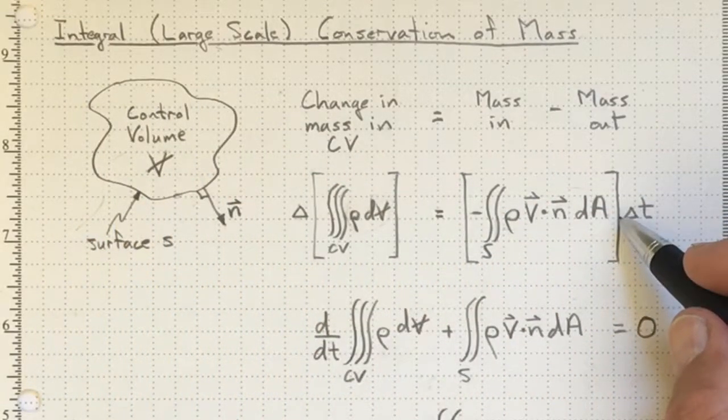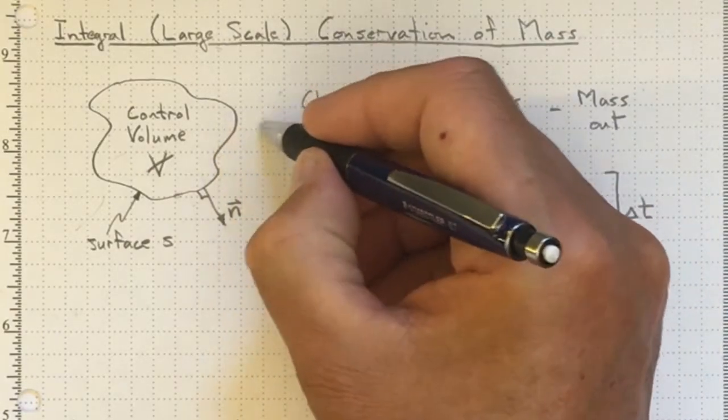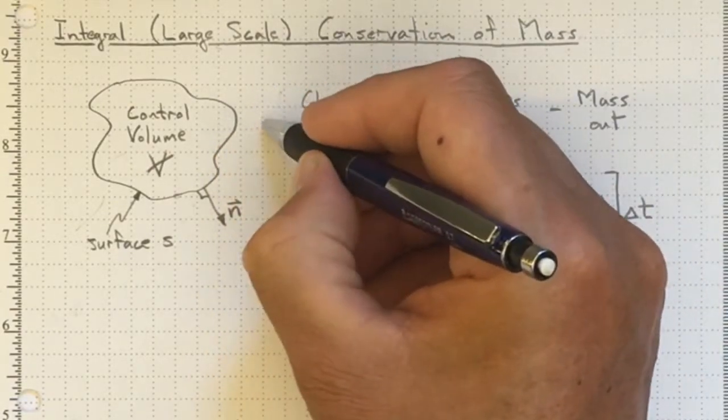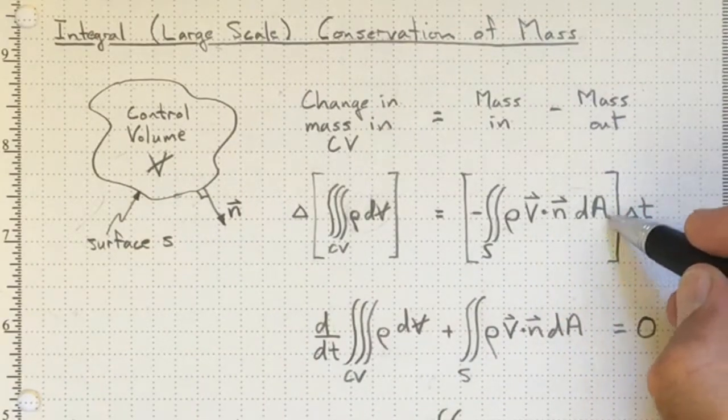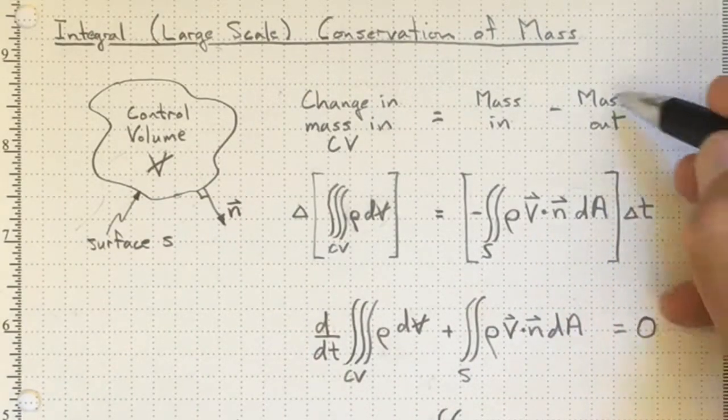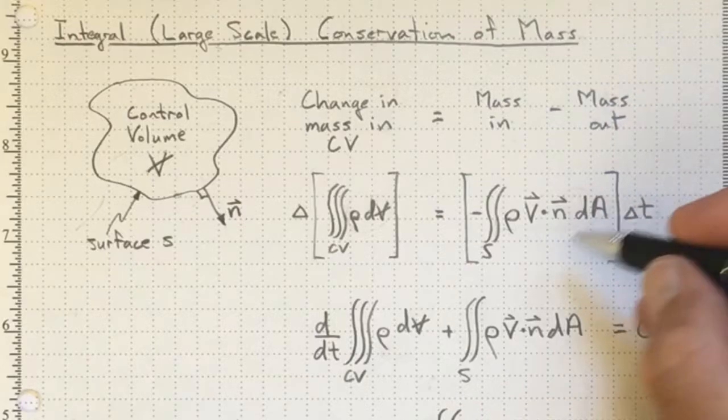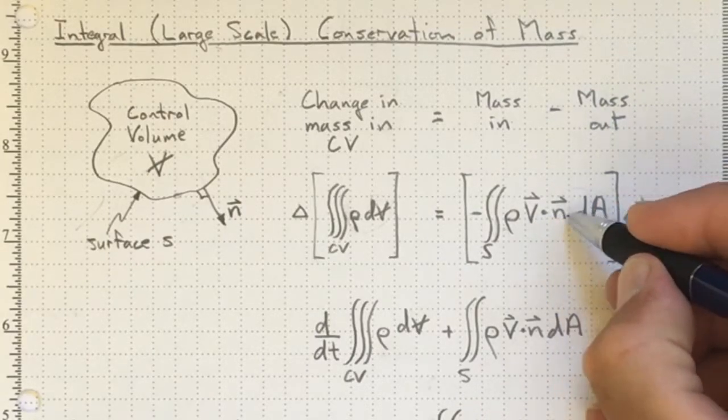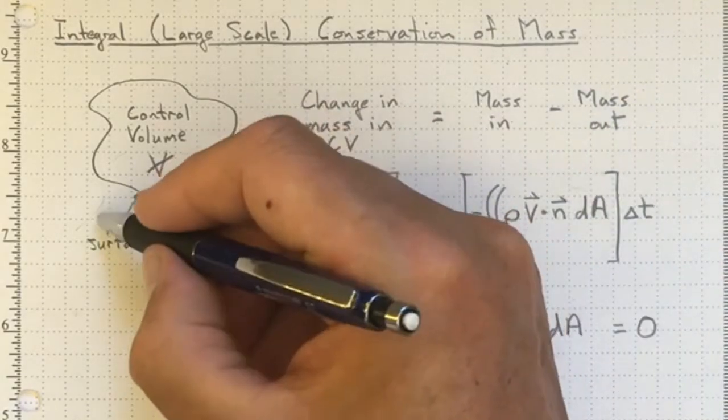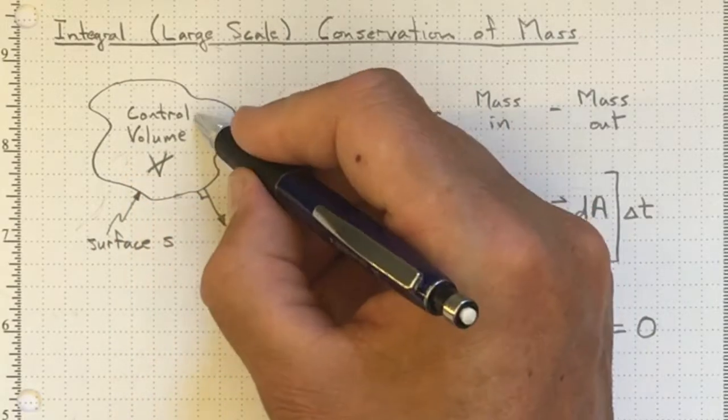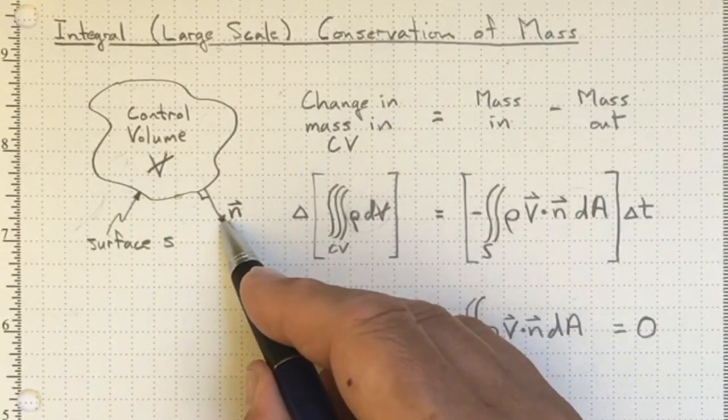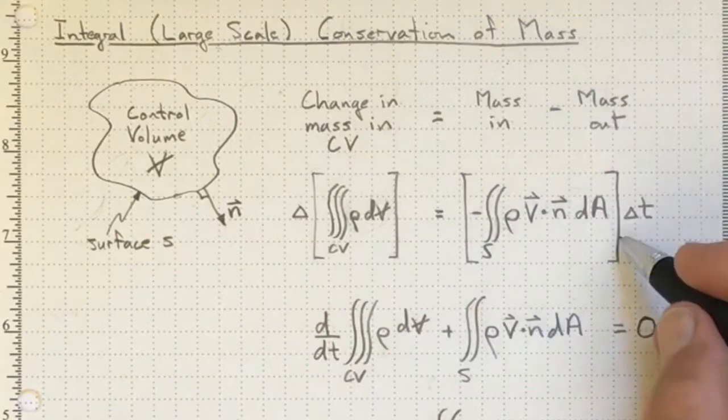Now, as it turns out, when we go over to somewhere where there's flow coming out of the control volume, exactly the same equation occurs to give us the negative mass out. The v.n switches signs depending on whether the v is pointing inwards or outwards. The normal vector is always pointing outwards from the surface.